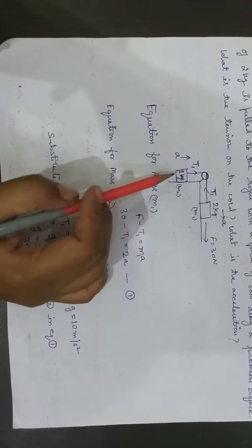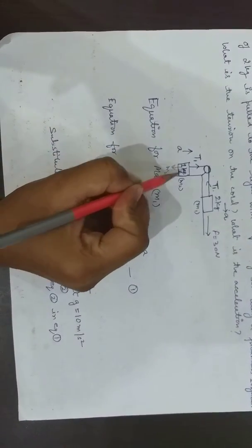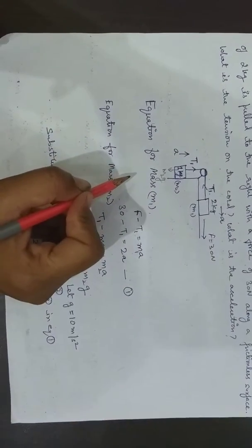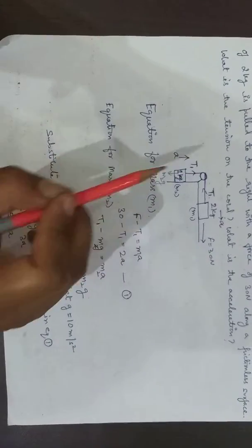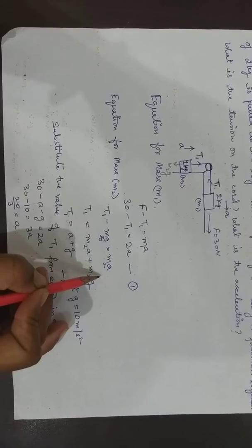T1 is the tension. M2G will be the weight in the downward direction and acceleration will be in the upward direction. So we get the equation T1 minus M2G equals M2A.